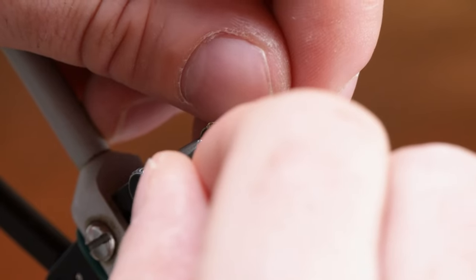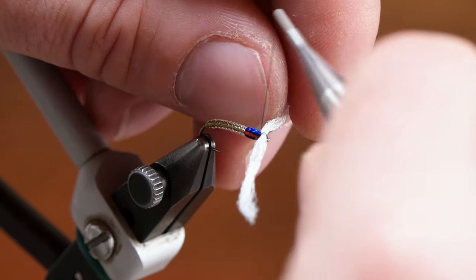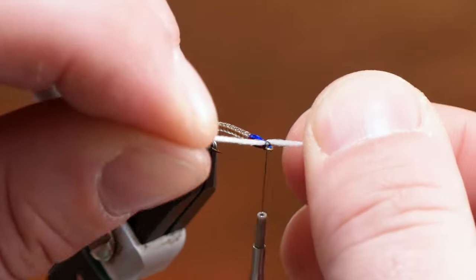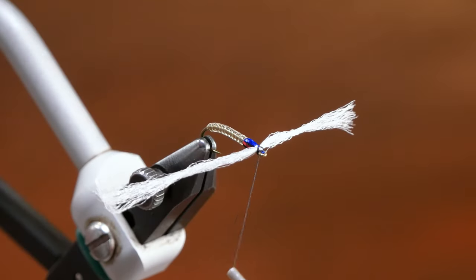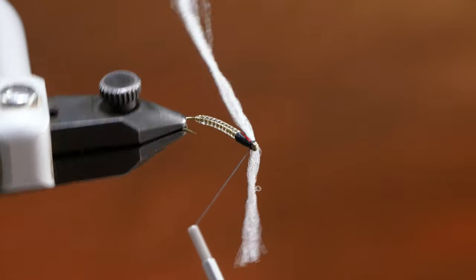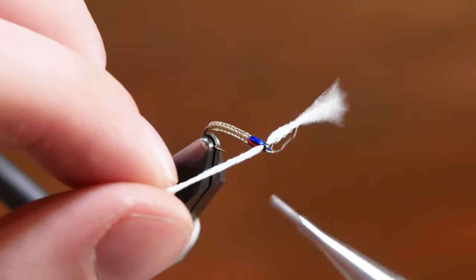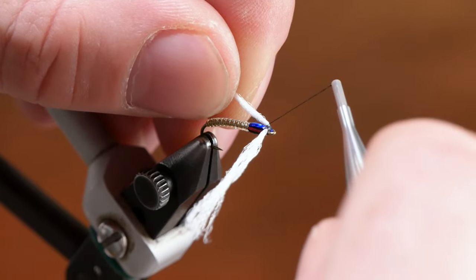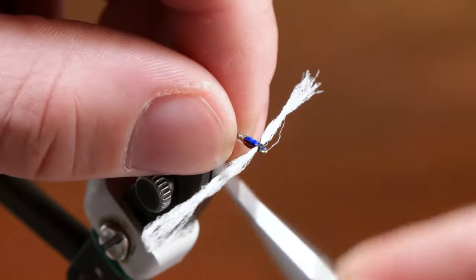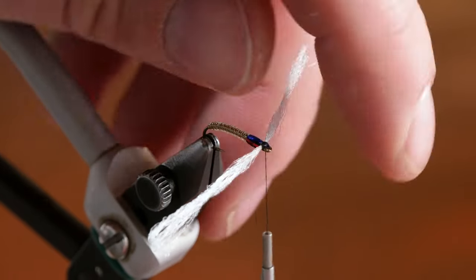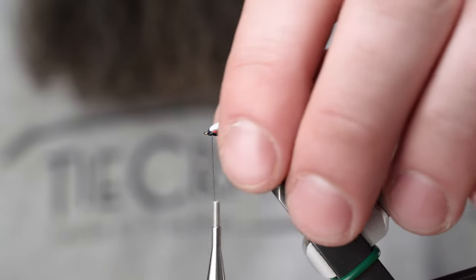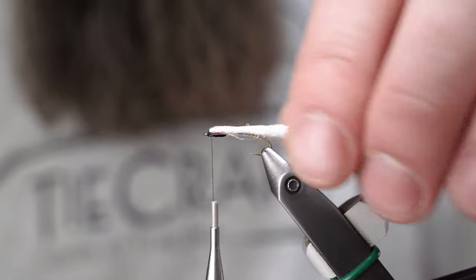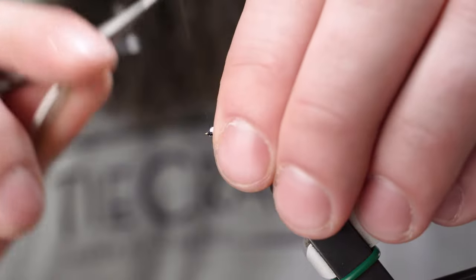I'm going to go ahead and spin my thread a little bit. Do crossing wraps. That way you're kind of creating a T with that there. Just kind of direct that antron back so we can do a whip finish here.